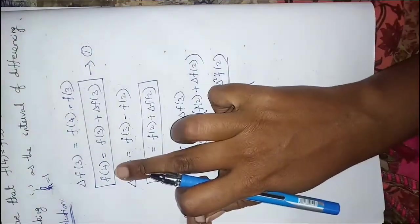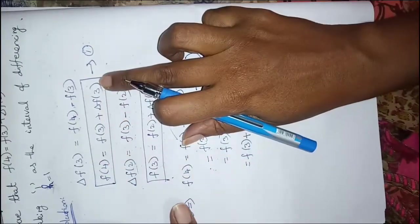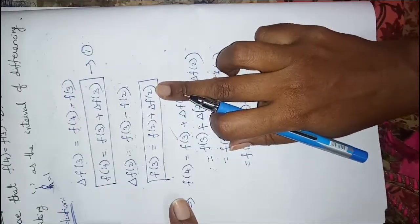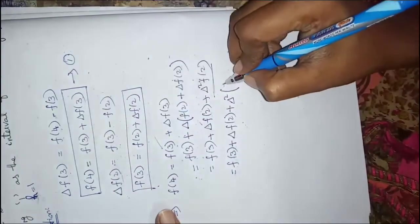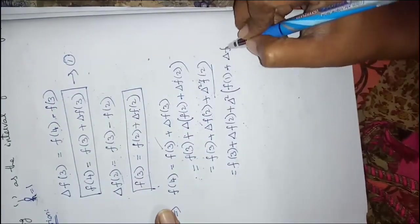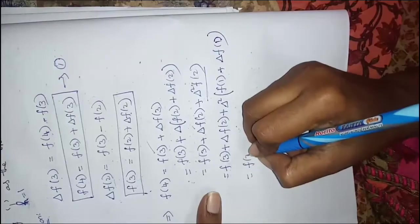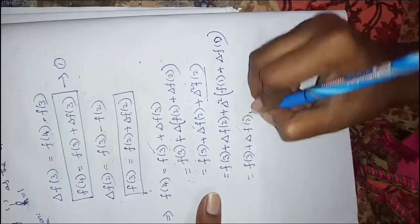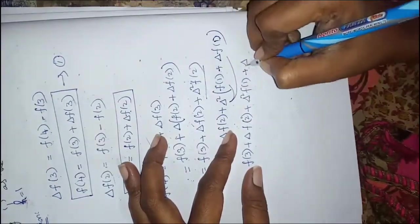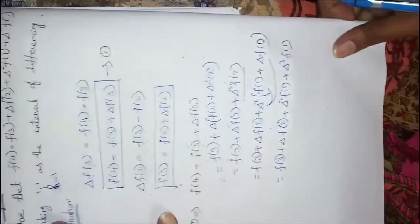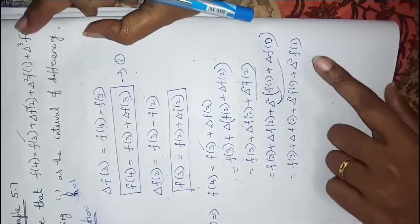Now f(4) is the first function: f(3) + Δf(3). f(4) equals before function plus delta into before function, where f(3) is the before function. Then f(2) is the before function plus delta into before function, and f(1) is there. So: f(3) + Δf(2) + Δ²f(1). Multiplying Δ² by Δ gives Δ³f(1). The proof shows f(3), Δf(2), Δ²f(1), and Δ³f(1).